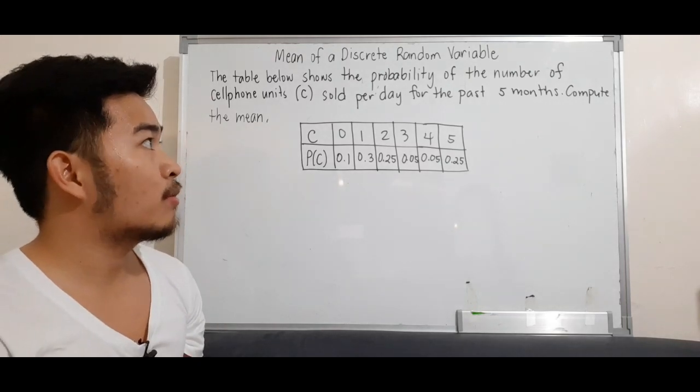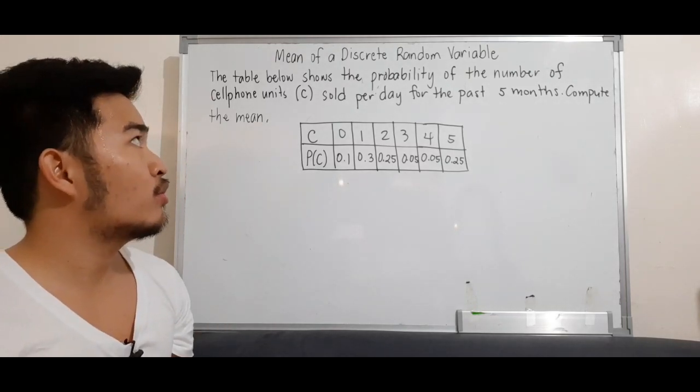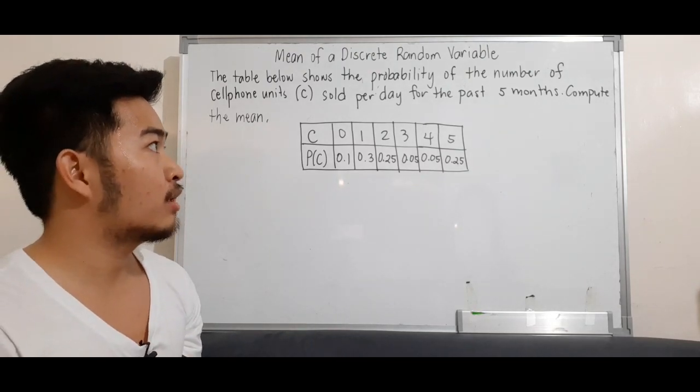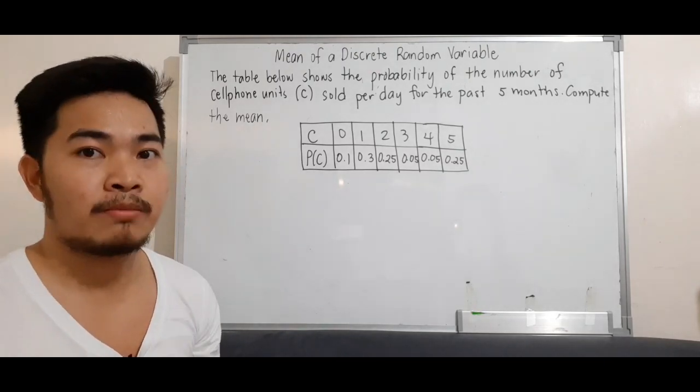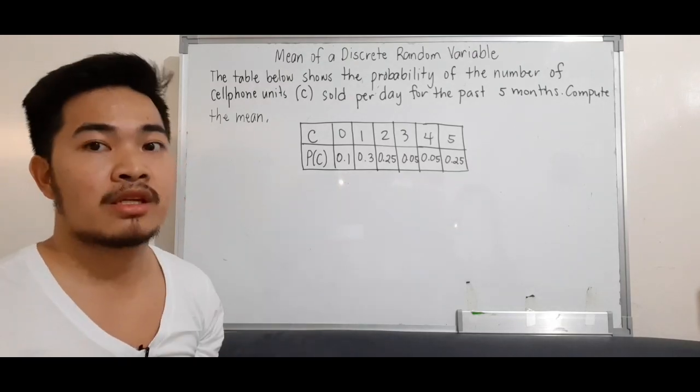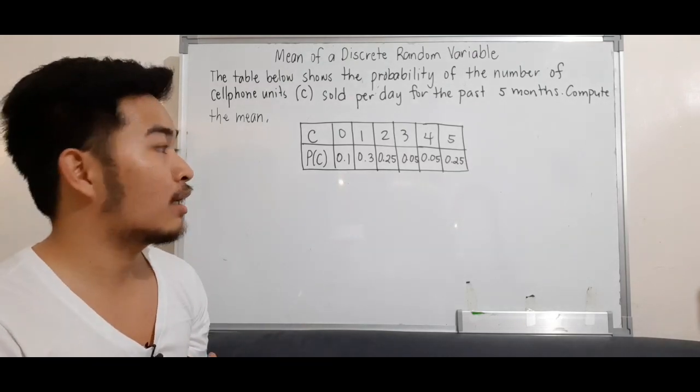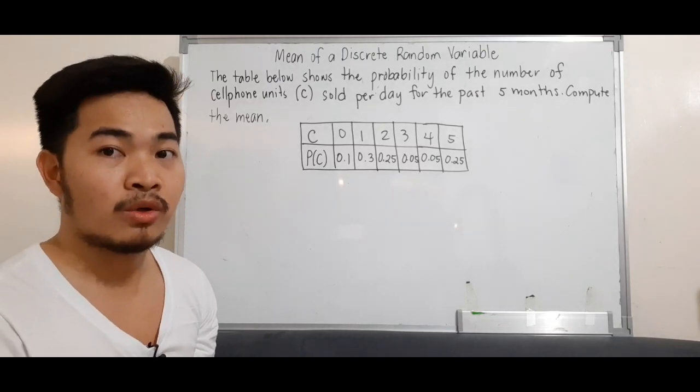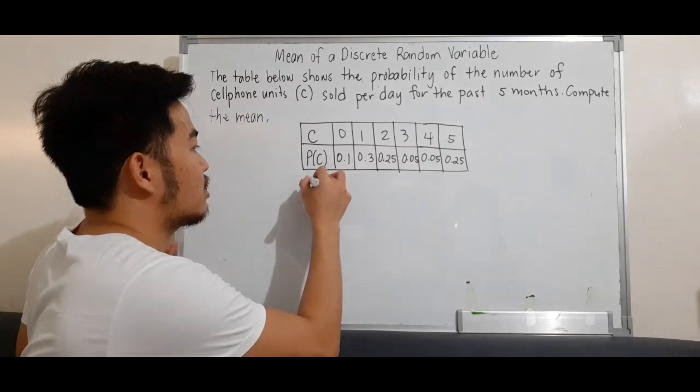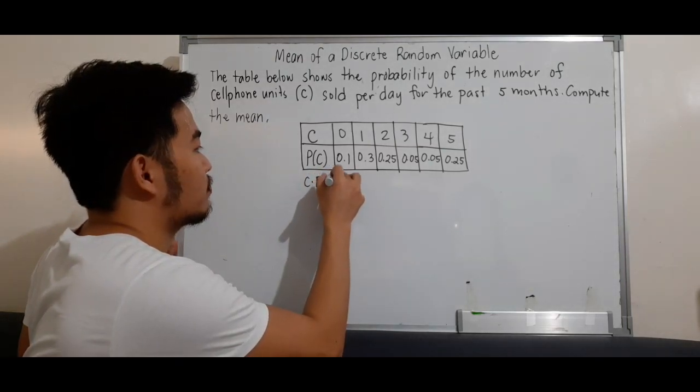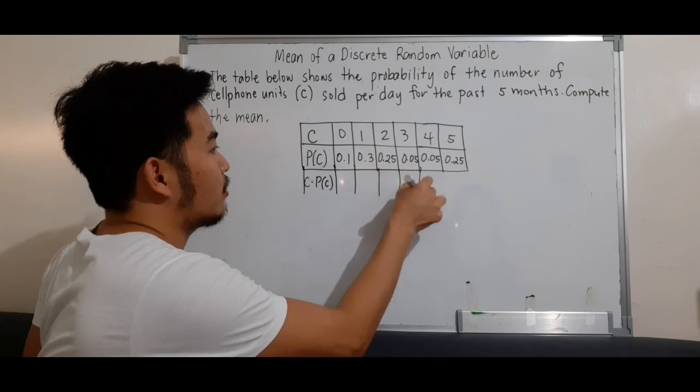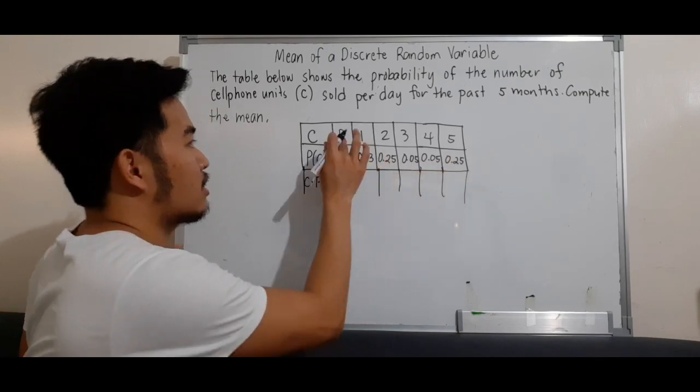Next example: The table below shows the probability of the number of cell phone units, denoted by the random variable c, sold per day for the past 5 months. Compute the mean. Since we're provided with the probability distribution table, we'll just create a row for c times P(c).